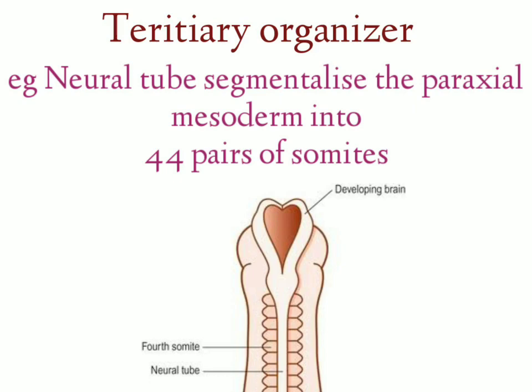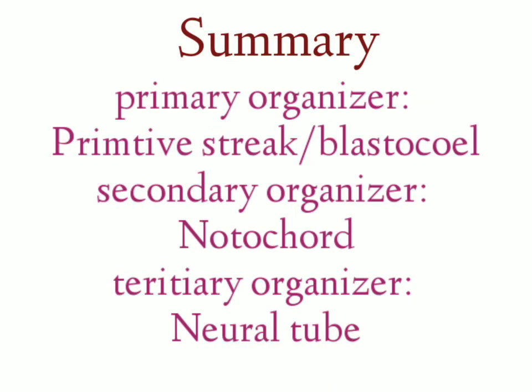There are totally 44 pairs of somites. In summary, the primary organizer is the primitive streak, the secondary organizer is the notochord in the development of the brain and spinal cord, and the tertiary organizer is the neural tube in the segmentalization of the paraxial mesoderm into the somites.